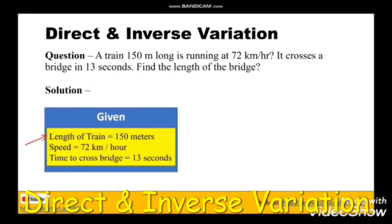In this particular question we are given the length of the train is 150 meters and the speed is 72 kilometers per hour, which has to be converted into meters per second. We know that one kilometer equals a thousand meters and one hour equals 3600 seconds. So we shall multiply 72 by thousand and divide it by 3600. We shall get 20 meters per second.